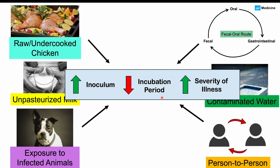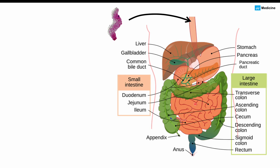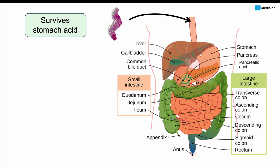The incubation period is how long it takes from exposure to the bacteria until symptoms appear. With more bacteria ingested, you'll have a shorter incubation period and more severe illness. The bacteria enter the gastrointestinal system, go through the esophagus, and survive — though are somewhat reduced by — stomach acid. It then enters the small intestine. Higher stomach acid can help prevent more severe infections.